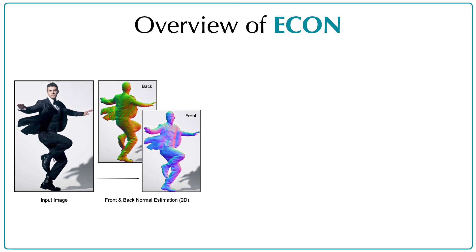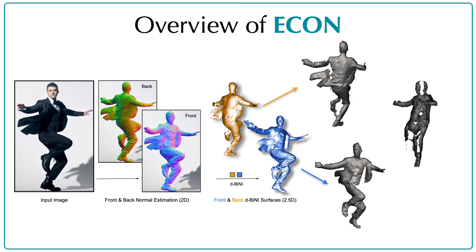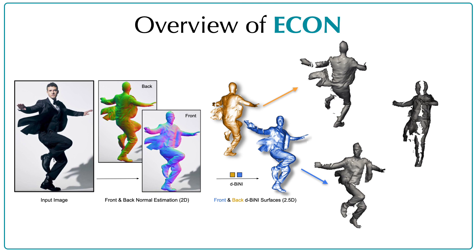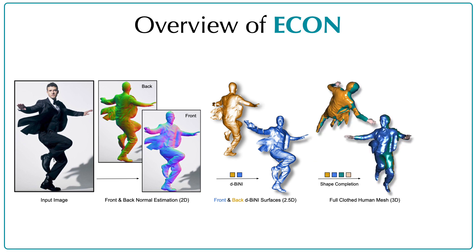Given a single RGB image, ECON reconstructs the clothed human in three steps. First, it infers detailed 2D normal maps for the front and back sides of the person. Next, guided by a SMPL-X estimate of the underlying body, the normal maps are converted into detailed yet incomplete 2½D front and back surfaces. It then in-paints the missing geometry between the two surfaces to obtain the final complete 3D human mesh.